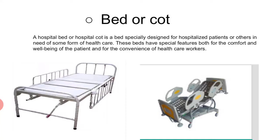Lekin aaj kal electrical beds bhi aate hai jo remote se control hote hai. Aur jo hospital ke jo beds hote hai, unki jo length hoti hai woh kitni rakhhi jayi — in standard — jo in ka measurement hai woh rakhha gaya hai: inki jo length hai woh 78 inch ki honi chahiye, aur 38 inch chodi honi chahiye, aur floor se inki height jo hai woh 28 inch honi chahiye. Jis ki wajah se jo nurse ya doctor jo bhi hai inki care kar rahe hai, unko jada pareshani nahi ho, thakke nahi, ya phir jada effort nahi lagane pade. Aur saath hi saath in mein side railing bhi hoti hai jis se patient ko girne se bachaya jata hai.